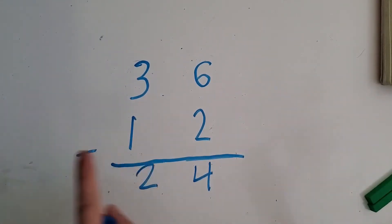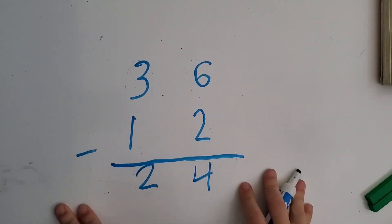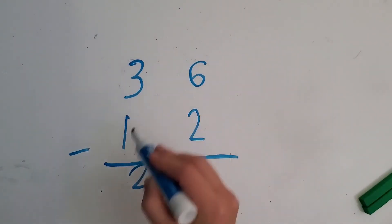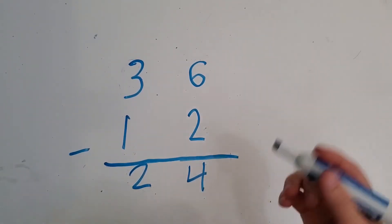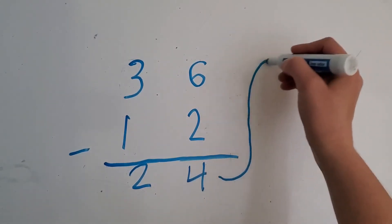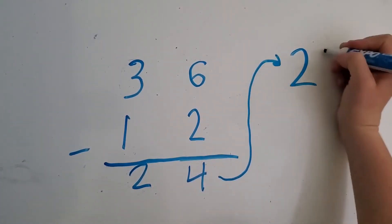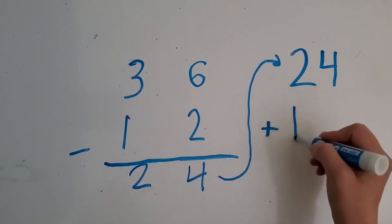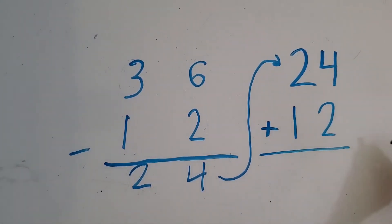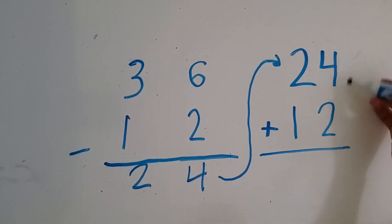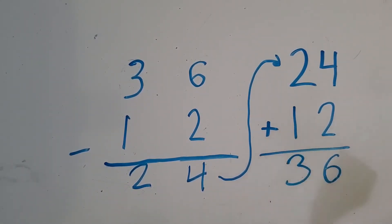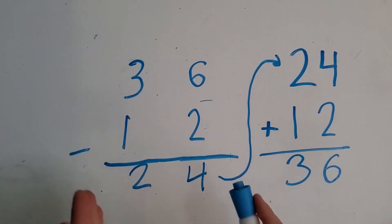Now I want us to check this answer using addition. Remember, this is our whole, this was part of it, and this was the other part. With addition, we do part plus part equals whole. So we're going to put 24 at the top — it goes in the opposite order for addition. So we have 24 plus 12. Let's add: we start with ones, so four plus two equals six. And then two plus one equals three. So we get 36. Did we get the same whole? Yes, we did. So we checked and we see that answer is correct.